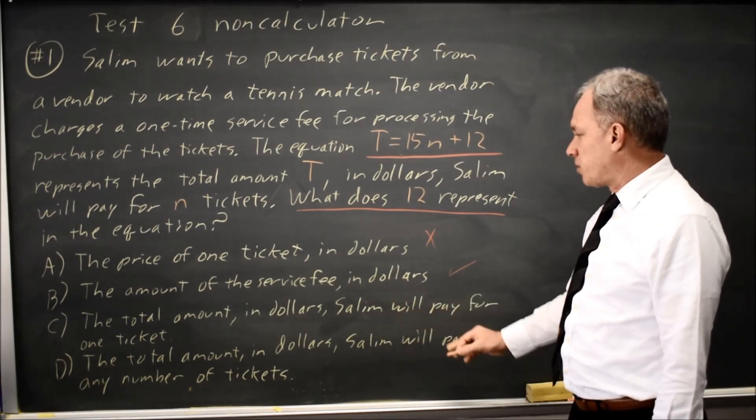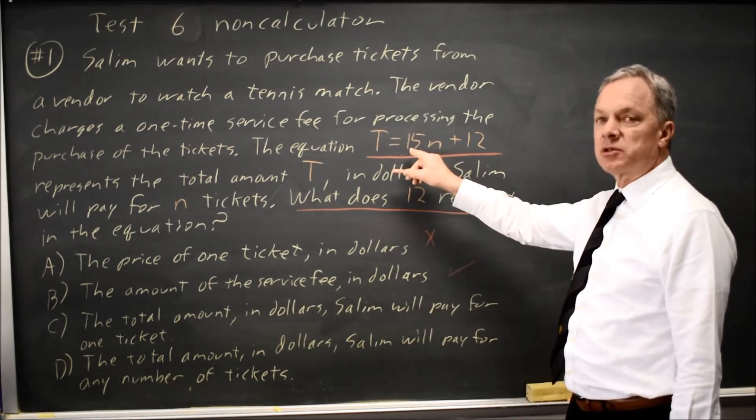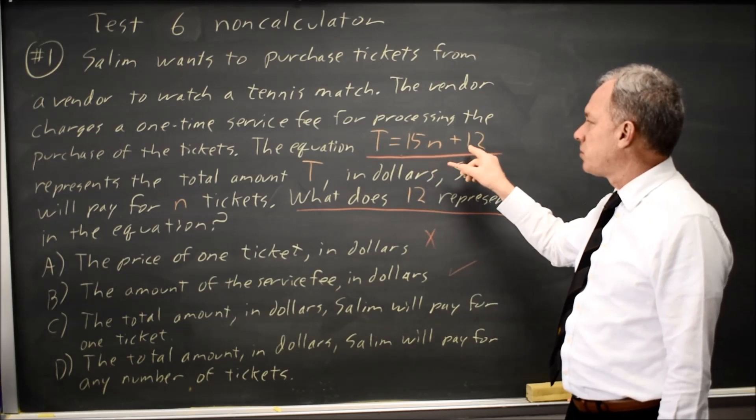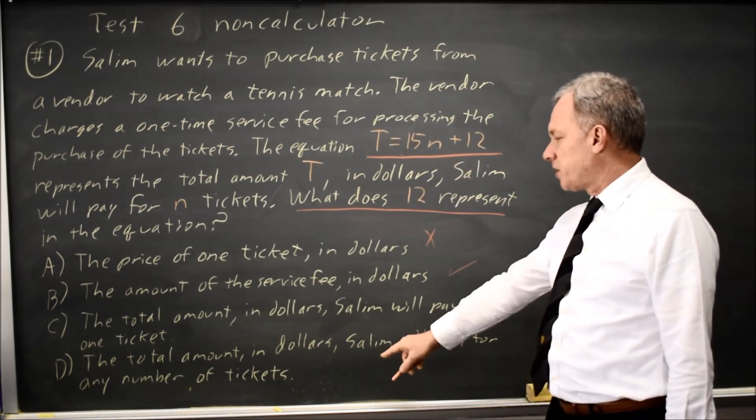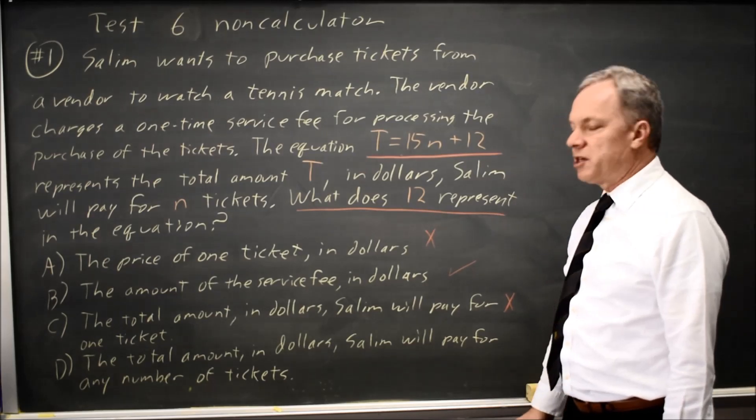The total amount in dollars Salim will pay for one ticket. If N equals 1, Salim pays 15 times 1 plus 12 is 27, that is not 12. And the total amount in dollars Salim will pay for any number of tickets.